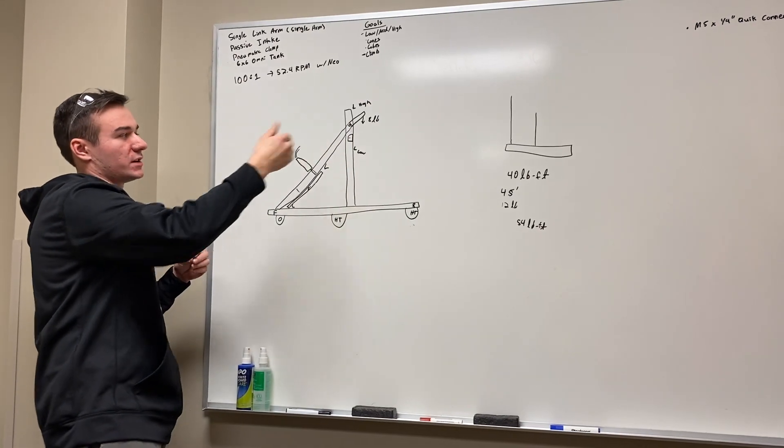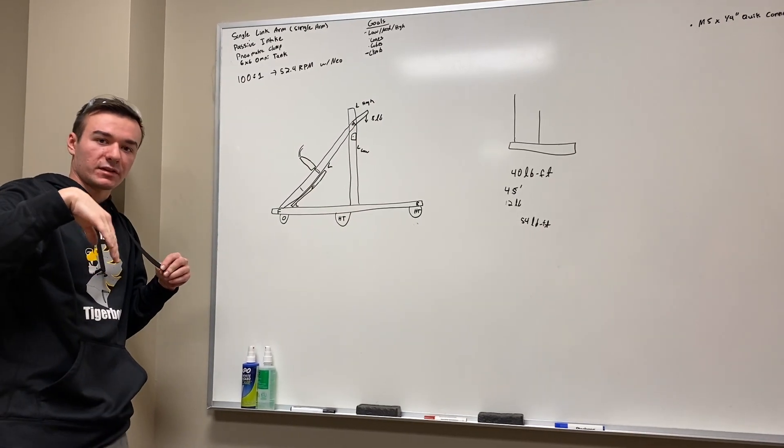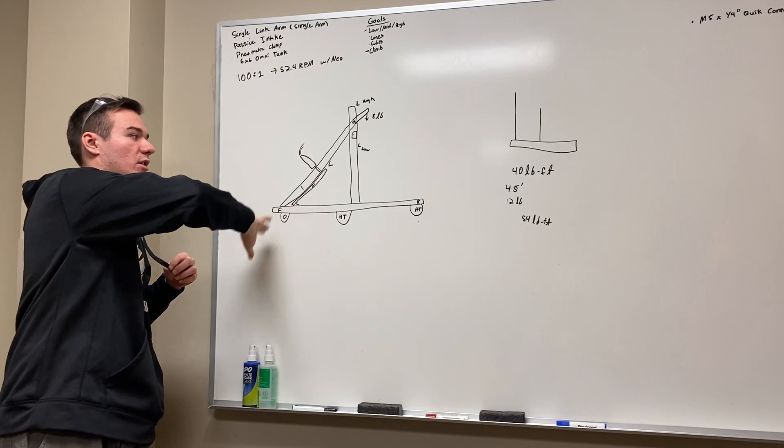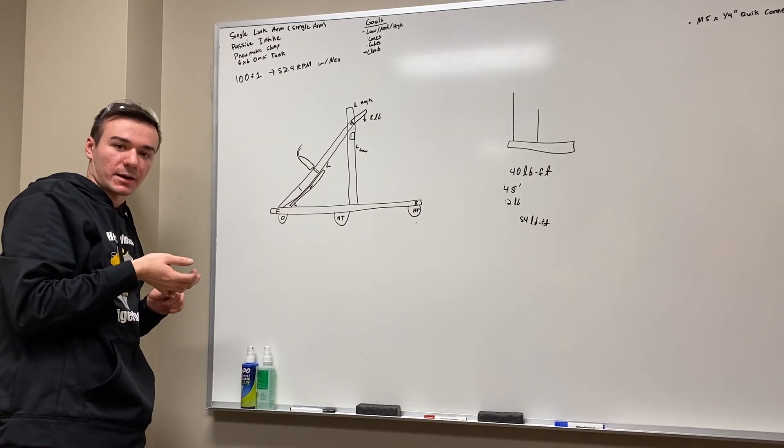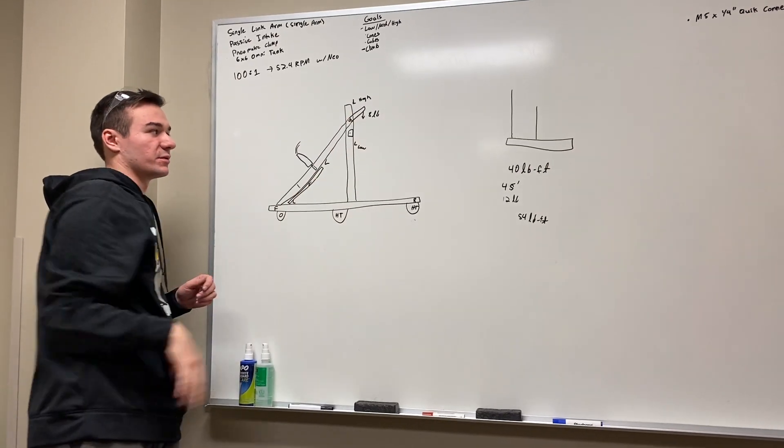We're also going to be using a counterweight just to help us with the offset arm. With the way this is designed, under suggestions of our programmers, we are going to be adding a counterweight to the rear of the robot here,